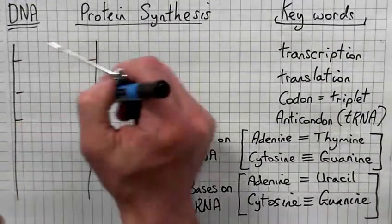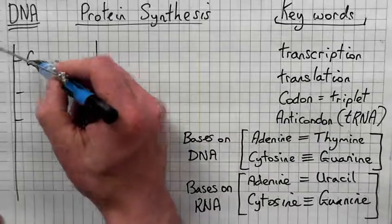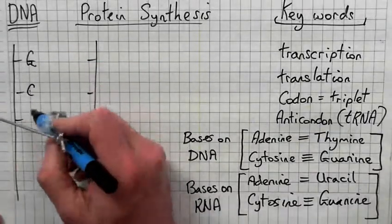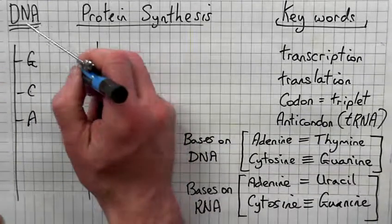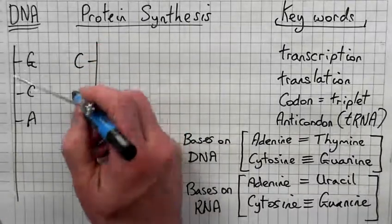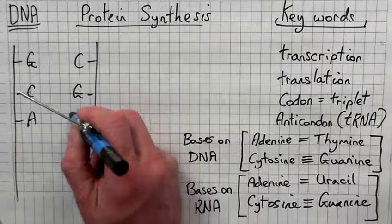So what we'll do is we'll just do two triplets. Alright, so we'll make it up. G, C and A. What pairs up with C? C, G and T.